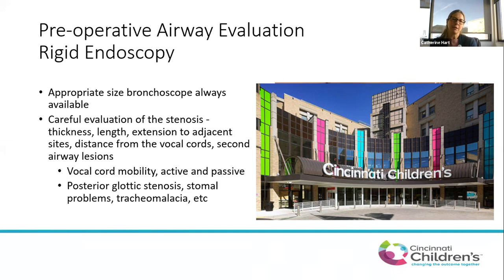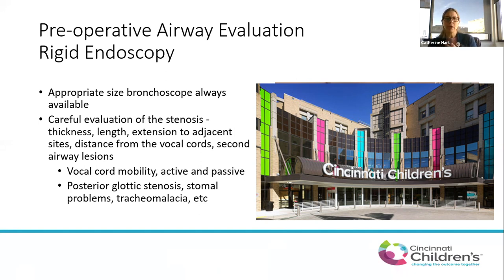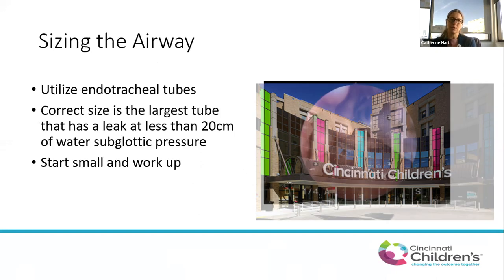During endoscopy, you're looking at the characteristics of the stenosis: how thick is it, how long, what adjacent sites are involved, does it involve the vocal cords, how far is it from them? You also want to assess vocal cord mobility and look for other areas of stenosis — posterior glottic stenosis, problems at the stoma level, tracheomalacia — all of which can impact surgical outcomes.